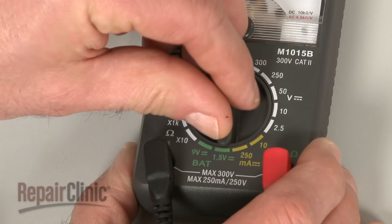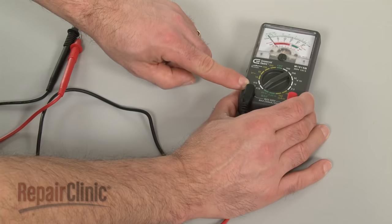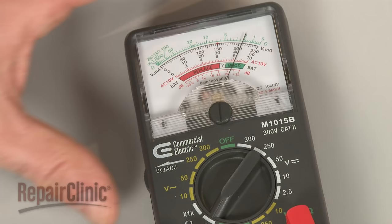When using an analog model, first rotate the range selection dial to the lowest setting for ohms of resistance. Then calibrate the meter by pinching the probes together while adjusting the needle to read zero.